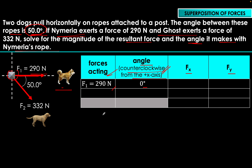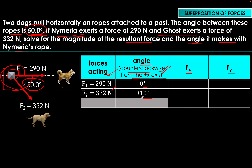For Ghost, the force is 332 Newtons. The angle measured counterclockwise from the positive x-axis is 310 degrees. This is because a full circle is 360 degrees, so 360 minus 50 equals 310 degrees. That's the angle Ghost's rope makes with the positive x-axis.